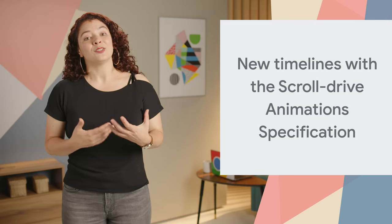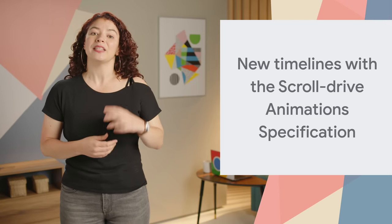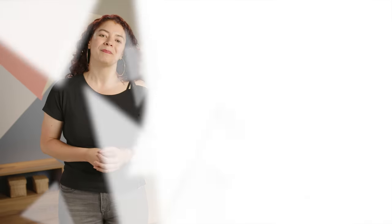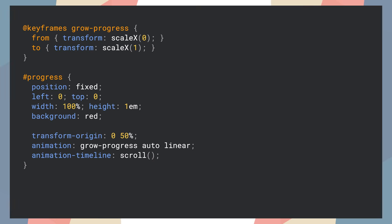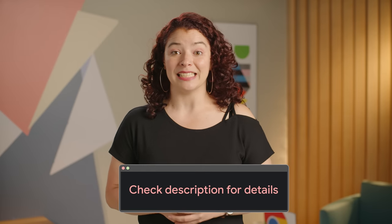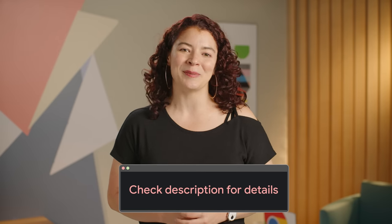The scroll-driven animation specification defines two new types of timelines that you can use: the scroll progress timeline and the view progress timeline. Here's a code sample that uses an anonymous scroll progress timeline to create a reading progress indicator fixed to the top of the viewport.